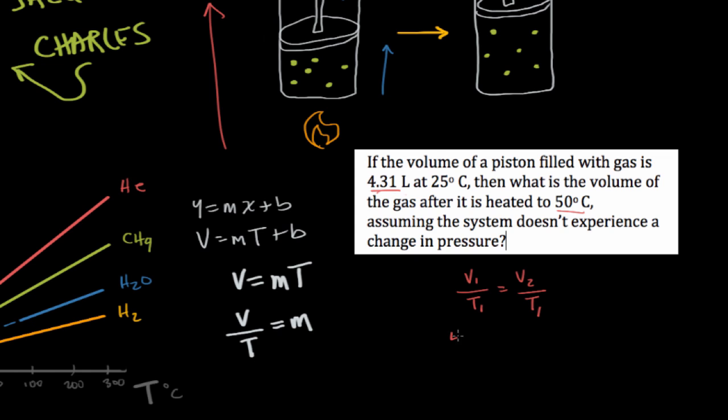Our initial volume is 4.31 liters, and our initial temperature is 25 degrees Celsius. But when we're using the ideal gas law, we really need to be operating in Kelvin because Kelvin allows us to not use negative values for temperature. Let's convert 25 degrees Celsius to Kelvin. We take 25 and add 273, which gives us 298 Kelvin. So our initial temperature is 298 Kelvin, and we're looking for the final volume, V2.